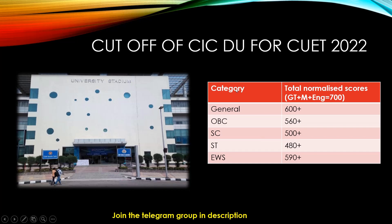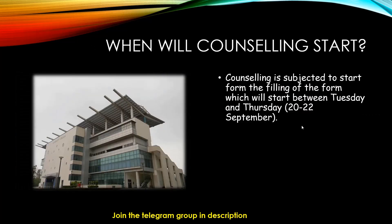Now let's talk about the cutoff for this year. These are normalized scores — you can add your scores from General Test, Mathematics, and English as a language subject, which total 700. For a General candidate, 600 plus can be a good score. There will be some drifting because of JoSAA counseling — students who take admission in CIC DU via JoSAA generally leave their seats, so there will be leftover seats. For OBC it is 560 plus, for SC it is 500 plus, for ST it is 480 plus, and for EWS it is 590 plus — all out of 700. If you wait till the last round, you can still expect to get admission.